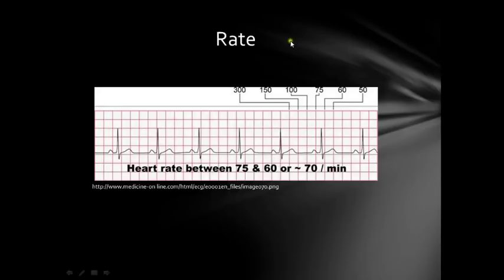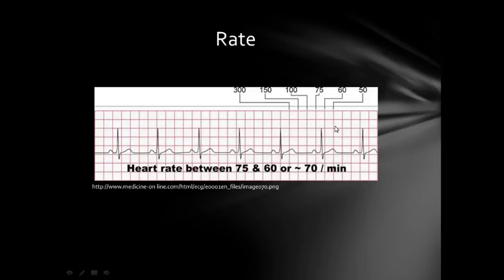Next, we look for the rate on an ECG. The easiest way to calculate the rate is to find an R wave on a thick line, and if the next R wave is one big box away, your heart rate is 300. If it's on the second thick line, the heart rate is 150; the third is 100; the fourth is 75; then 60 and 50. So: 300, 150, 100, 75, 60, 50 — this is the easiest and quickest way to estimate the heart rate.